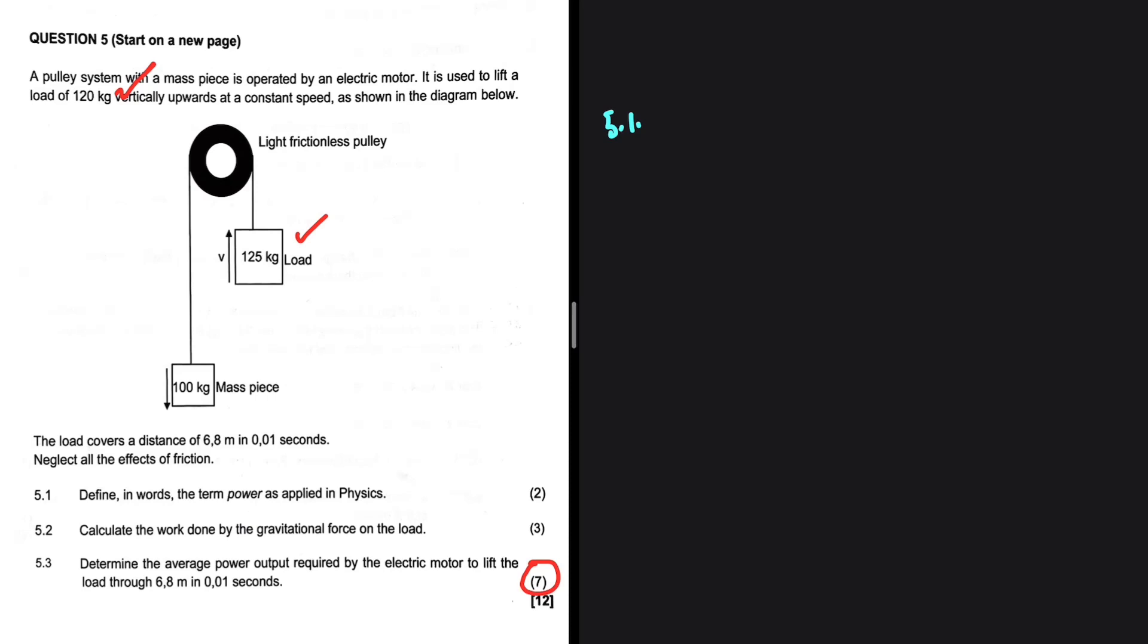Power is the rate at which work is done. Let's move to 5.2: calculate the work done by the gravitational force on the load. So what am I supposed to use now? Am I supposed to use 125? Am I supposed to use 120? It's just a mess. Okay, fine.